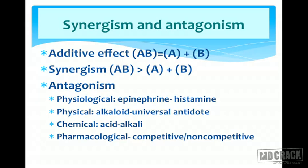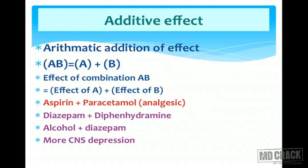True drug synergism (supra-additive) occurs when the effect of the combination is much more than the arithmetic addition of effects — like two plus two equals five. Examples of additive effects: aspirin and paracetamol together add to analgesic effects; diazepam and diphenhydramine produce additive CNS depression; alcohol and diazepam together produce additive CNS toxicity.